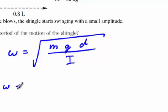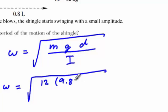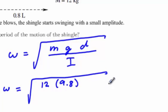In our case, we know most of these constants already. The mass is given in the figure as 12 kilograms. G is 9.8 meters per second squared.